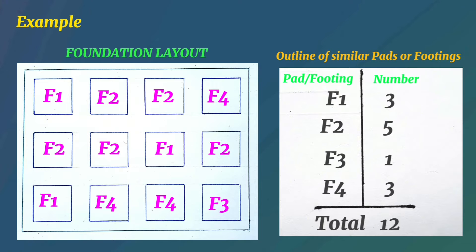This table outline is important because once we calculate the number of steel bars required for a single footing — for example F1 — we simply multiply by three to get the total for all three at once, without calculating each separately. Similarly, when preparing bar bending shapes, we find the cutting length or bend shape for one footing and multiply by the number of similar ones. Drawing this table avoids wasting time working out each footing individually.